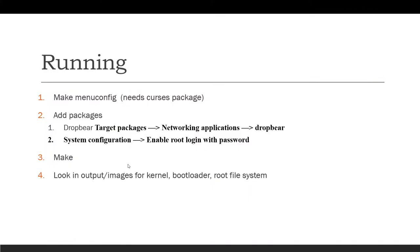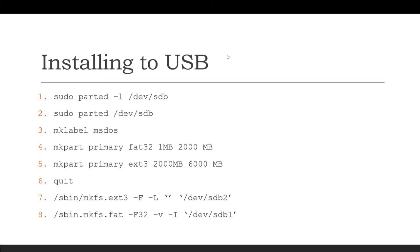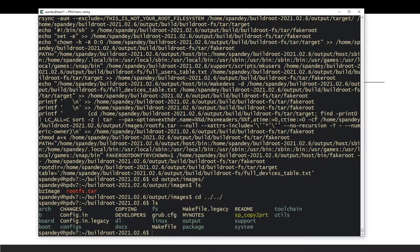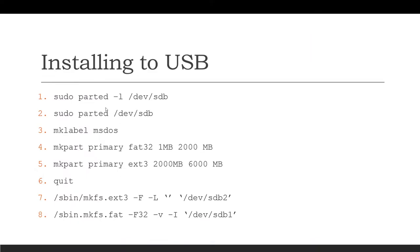Now we have our OS ready to go and we need to prepare a USB for installing it. Follow these instructions: first you make two partitions on sdb — which is my USB drive. You make a partition table using MS-DOS type, then create two partitions. The first is FAT32 starting at 1 MB and going up to 2 GB — this is the boot partition. The second partition can hold the OS root filesystem.